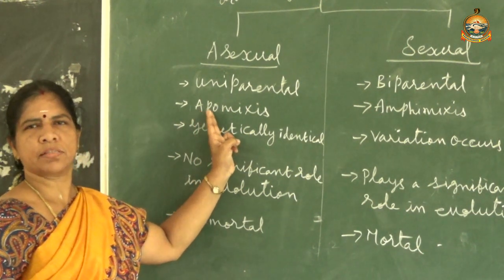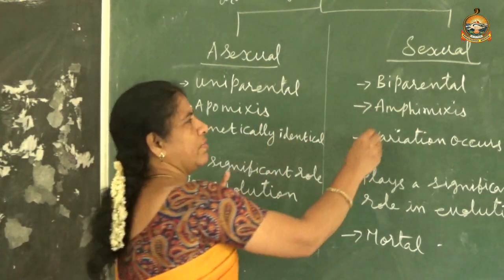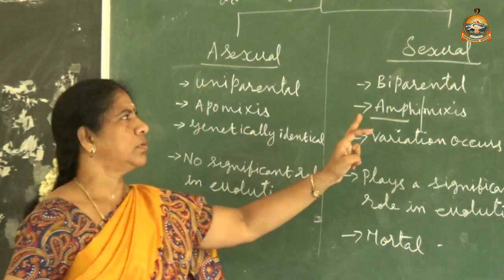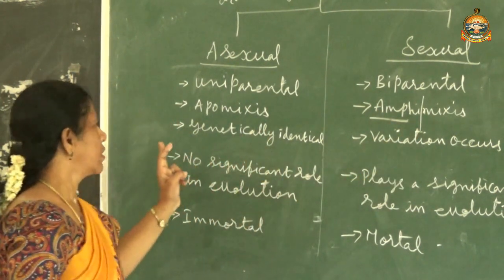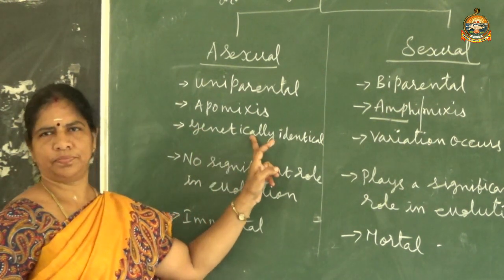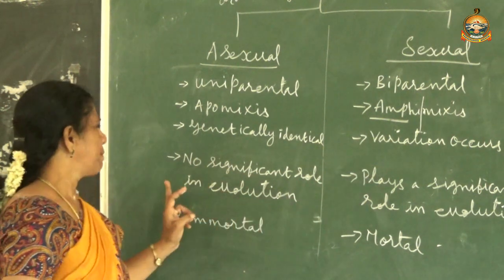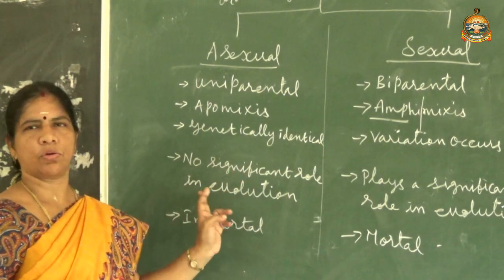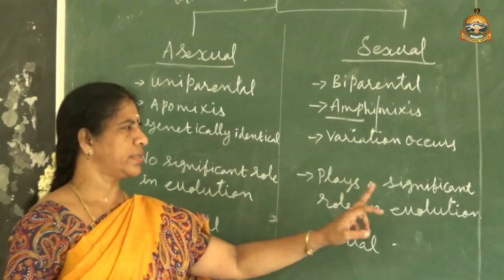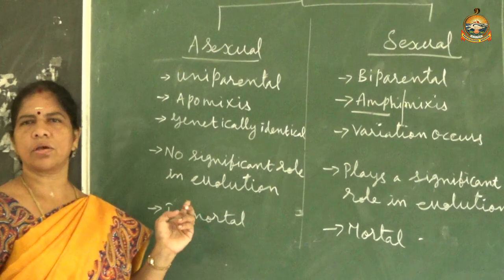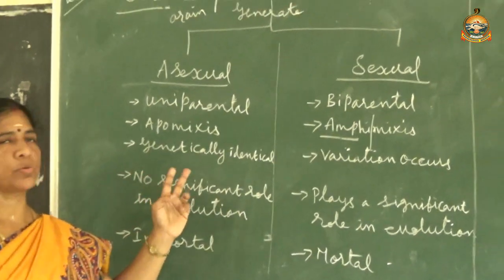In asexual reproduction, there is no fusion of gametes - this is called apomixis. In sexual reproduction, there is amphimixis - fusion of gametes takes place. The offspring in asexual reproduction are genetically identical to the parent and do not play a significant role in evolution. In sexual reproduction, variations may occur, playing a significant role in evolution. In asexual reproduction the parent is considered immortal, while in sexual reproduction all organisms are mortal.